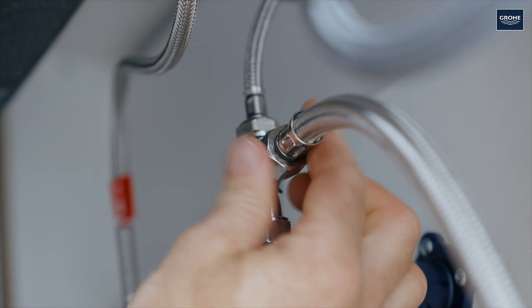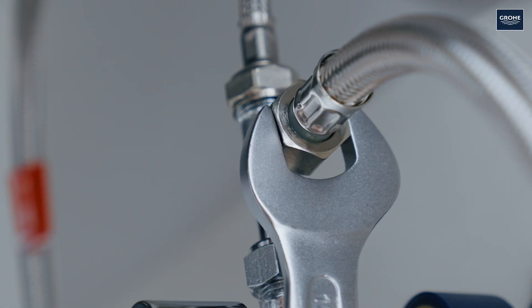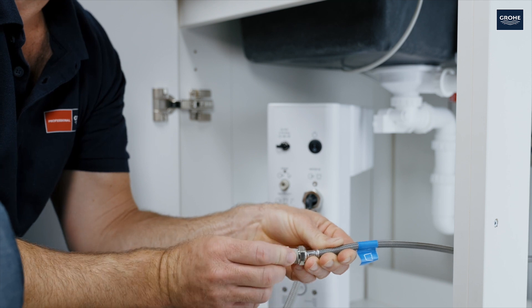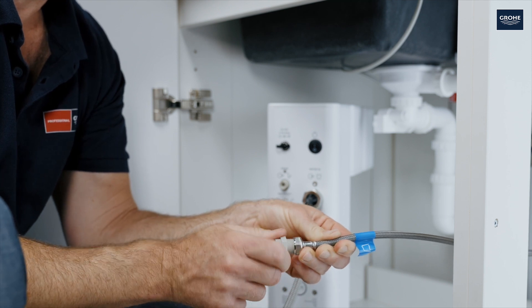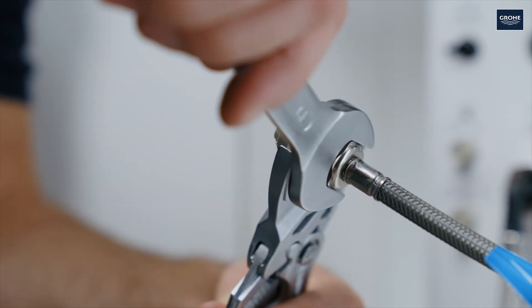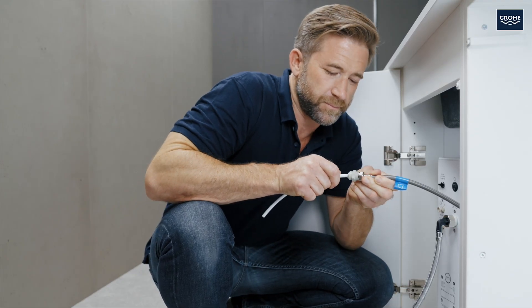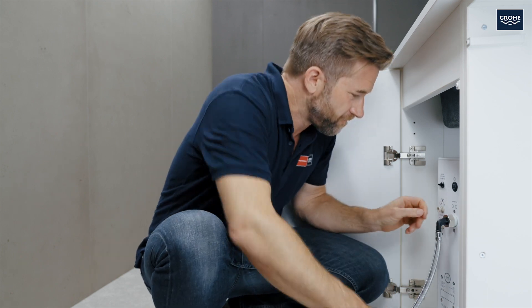Next screw the other end onto the T-piece on the cold water connection. The grey adapter is then screwed onto the inlet hose for the filtered water. Then press this white hose into the adapter, remove the plug on the filter and insert it into the filter system.